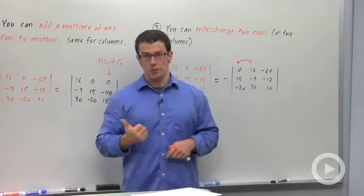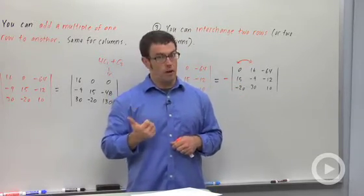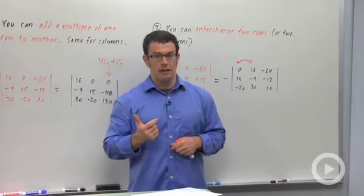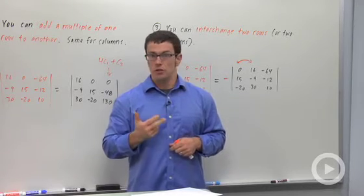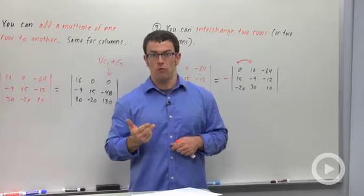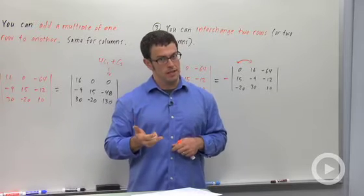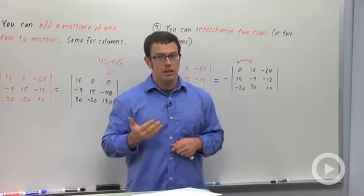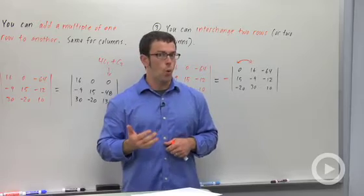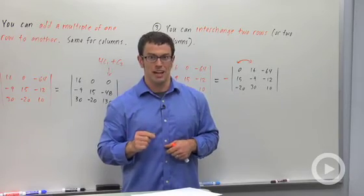So the three things you can do to a determinant to simplify it. One is you can factor a constant out of any row or any column. Two, you can add any multiple of one row to another row, and the same goes for columns. And three, you can interchange two columns or two rows. Just remember to change the sign when you do that.